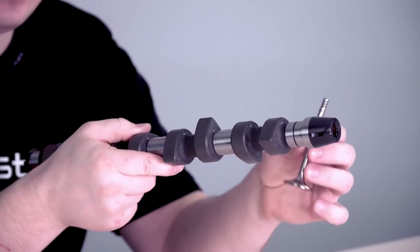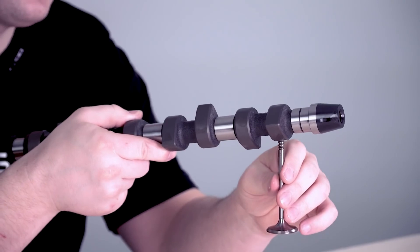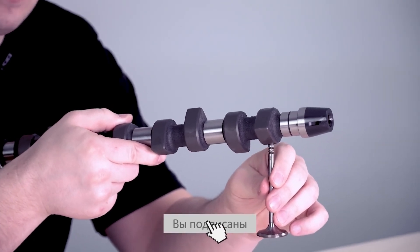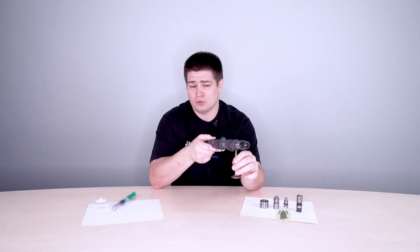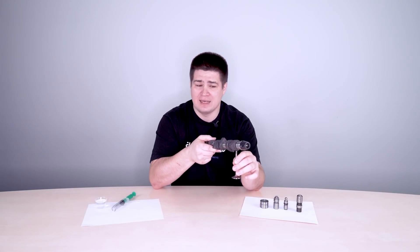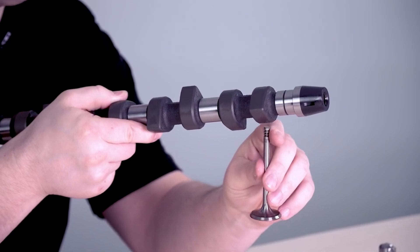So these two parts, the valve and the camshaft, are constantly in contact with each other. And the problem is that when the engine heats up, the linear dimensions of the parts change and the so-called thermal gap appears at this point of contact.